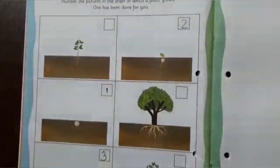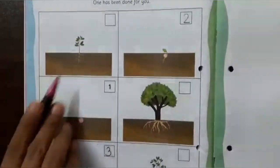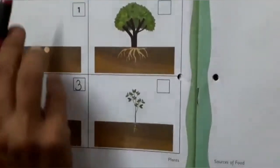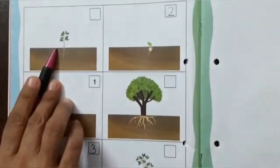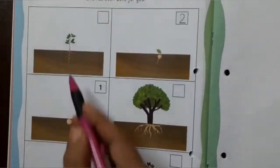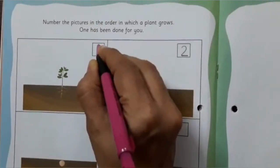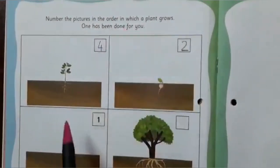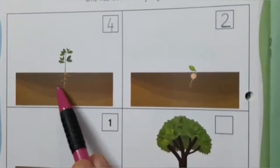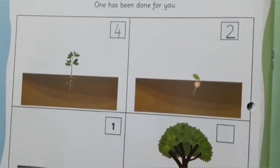Now after this, which will be at number four? You can see here growth is more here and growth is a little less here. So after the sapling, we are going to write number four here — you can see a plant has grown roots, roots are growing down under the soil.